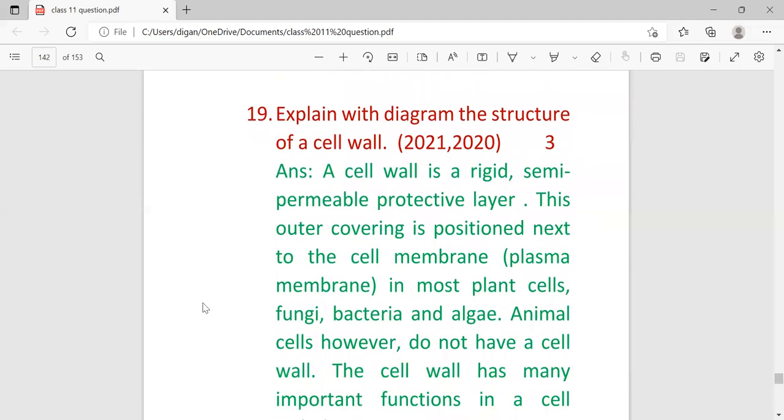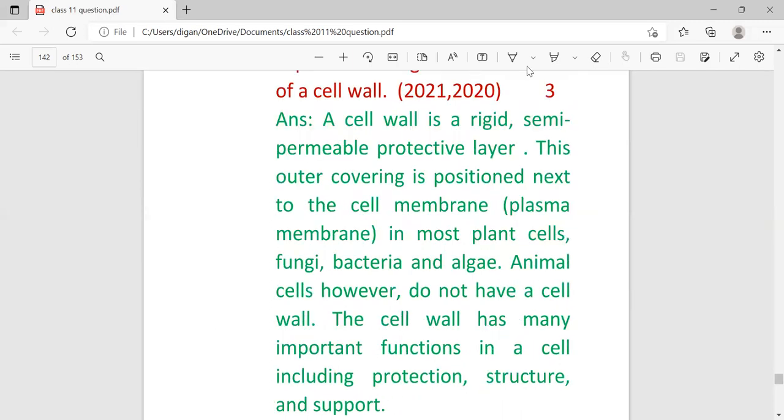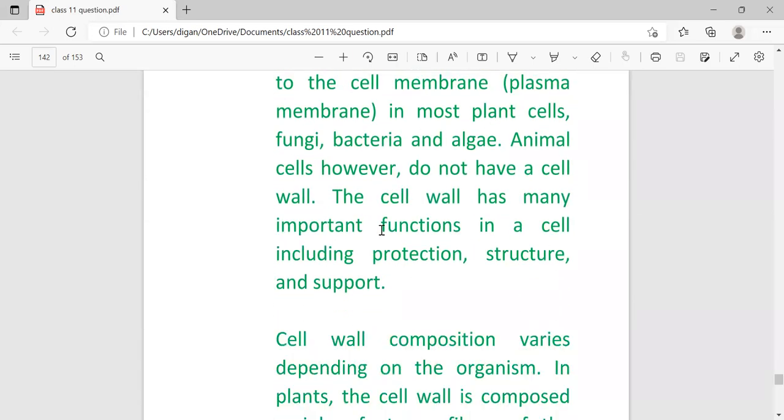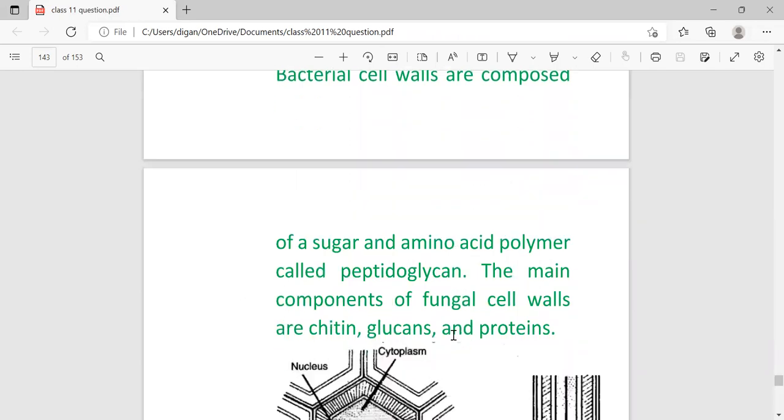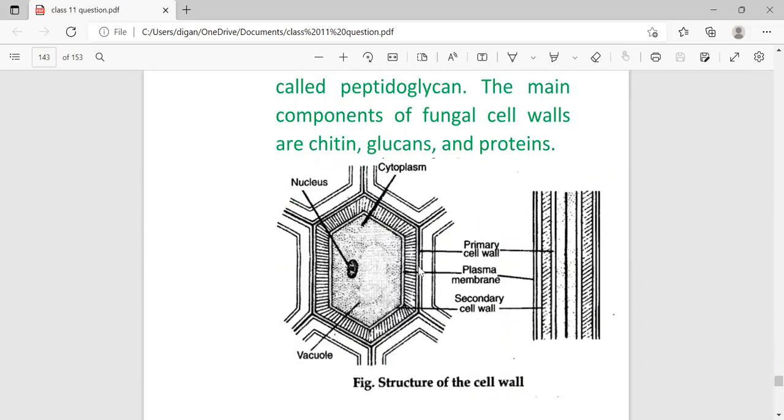Explain the diagram and structure of a cell wall. Continuously repeated in 2021. A cell wall is a rigid, semi-permeable protective layer, the outer covering positioned next to the cell membrane in most plant cells, fungi, bacteria, and algae. Animal cells, however, don't have a cell wall. The cell wall has many important functions in a cell, including protection, structure, and support. Cell wall composition varies depending on the organism. In plants, the cell wall is composed mainly of strong fibers of carbohydrate polymer cellulose.